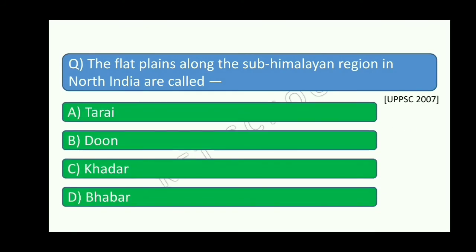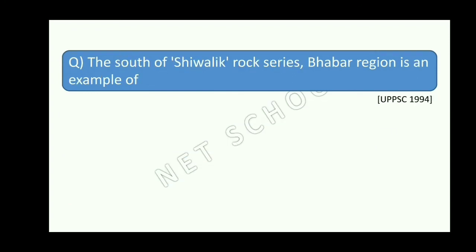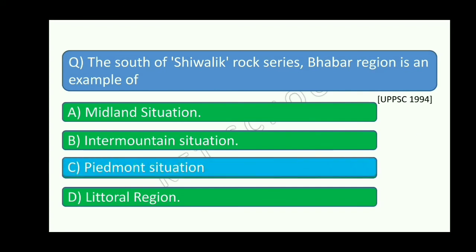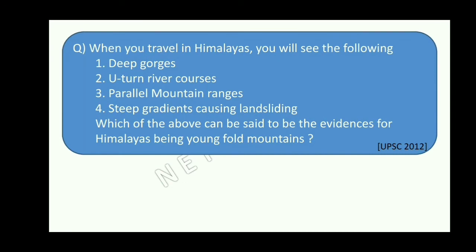The Himalayan region in North India — what is the name of the flat plain? Bhabar. The south of the Shivalik rock series — the Bhabar region — is an example of a Piedmont situation. A Piedmont situation means rivers disappear underground here. When you travel in the Himalaya, you will see Deep Gorges, antecedent river courses, parallel mountain ranges, and steep gradients causing landslides. Which of the above can be said to be evidence of the Himalaya being a young fold mountain?